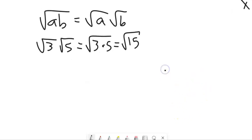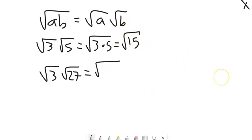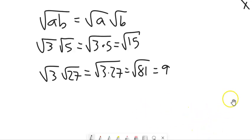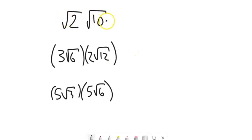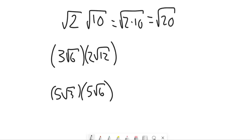Sometimes in these types of problems things are reducible. Let's say we had square root of 3 times square root of 27. That's the same as the square root of 3 times 27, which is 81. And the square root of 81 is 9. So let's dig into some problems. The square root of 2 times the square root of 10 is the square root of 20, and since 20 is 4 times 5, that gives us 2 root 5.